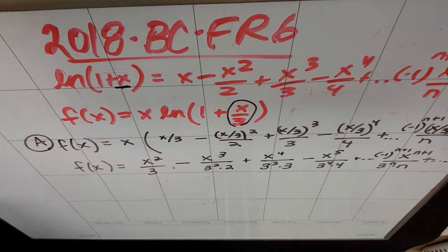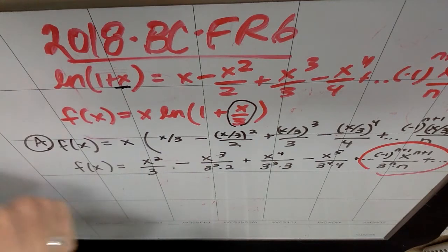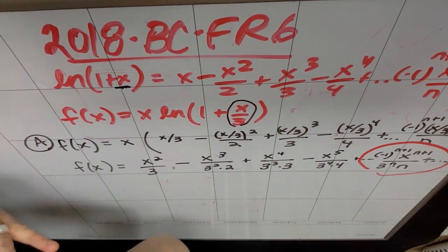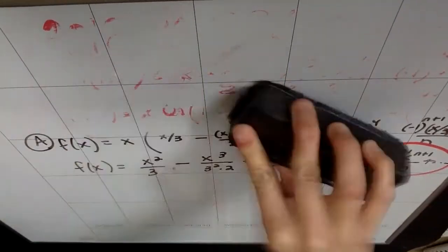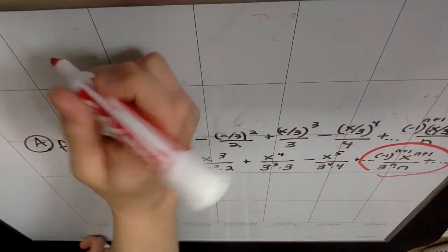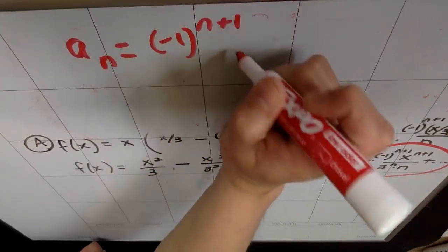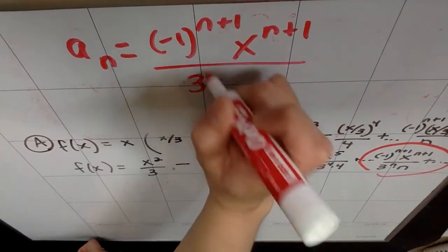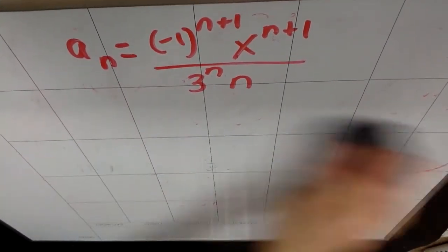Part B: determine the interval of convergence for this McLaurin series, show the work that leads to your answer. When they say interval of convergence, we're talking ratio test. Once you find the endpoints, you check the endpoints. I'm going to write what the nth term is — a sub n equals negative one to the n+1 times x to the n+1 over (3ⁿ · n) — because I'm going to need a lot of room for this ratio test.